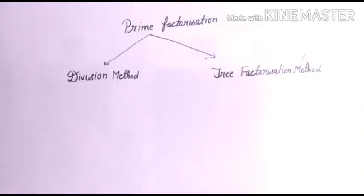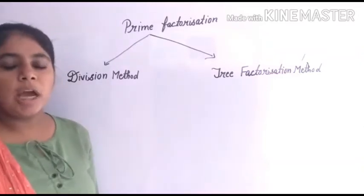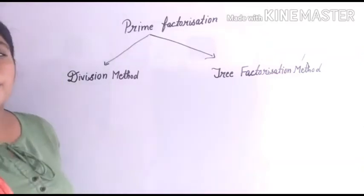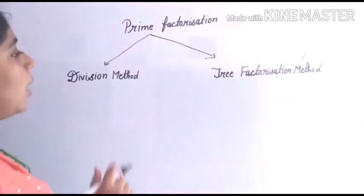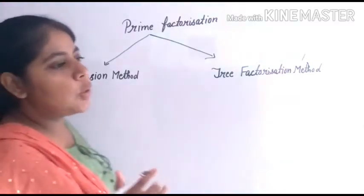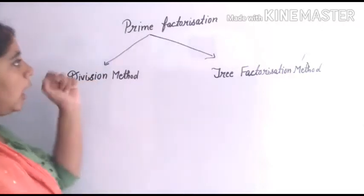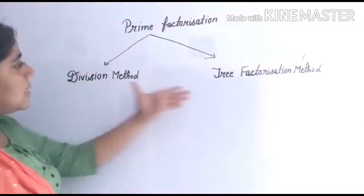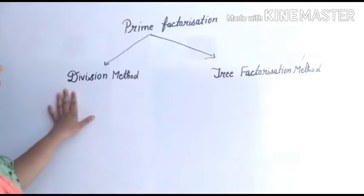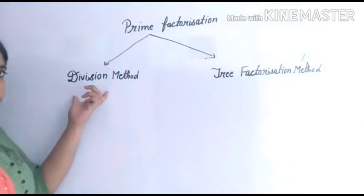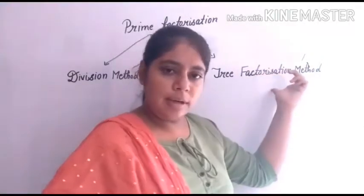Now we are going to go to Prime Factorization. Prime factorization is the product of prime numbers. We can do two methods: the first one is the division method, and the second one is the tree factorization method.